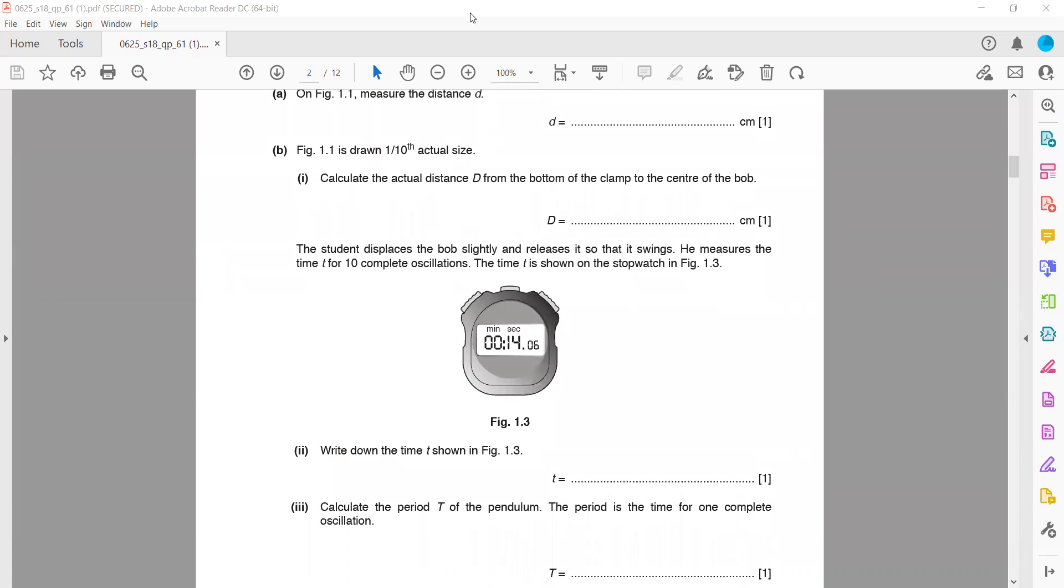He measured the time for 10 oscillations using a stopwatch. Write down the time: it is 14.06 seconds. Now calculate the period for the pendulum, the time for one oscillation. This is the time for 10 oscillations, so we divide by 10: 14.06 divided by 10 equals 1.406 seconds. This is the time for one complete vibration or oscillation.